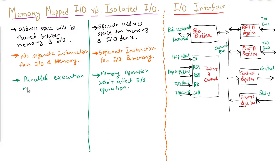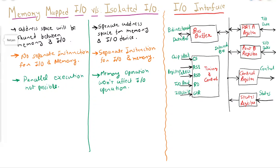One downside of Memory Mapped IO is that parallel execution may not be possible. For example, if we have a single-port memory that is being used by a memory operation, we cannot simultaneously perform an IO operation because the address space is shared.